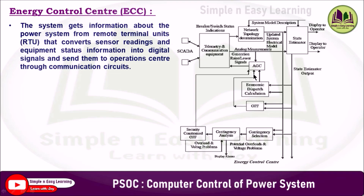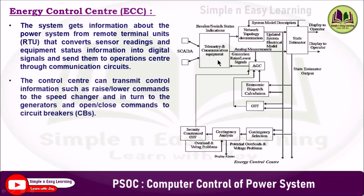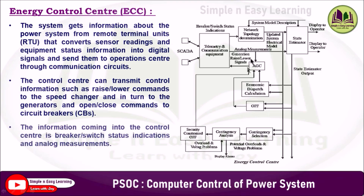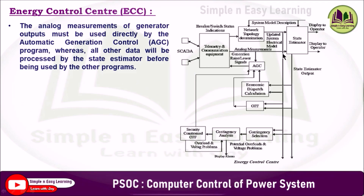The system gets information about the power system from a remote terminal unit (RTU) that converts the sensor readings and equipment status information into digital signals and sends them to the operation center through the communication circuit. The control center can transmit control information such as raise or lower commands to the speed changer and in turn to the generators, and open and close commands to the circuit breakers. The information coming into the control center includes breaker/switch status indications and analog measurements. Analog measurements of generator output are used directly by the automatic generation control, whereas all other data will be processed by the state estimator before being used by other programs.